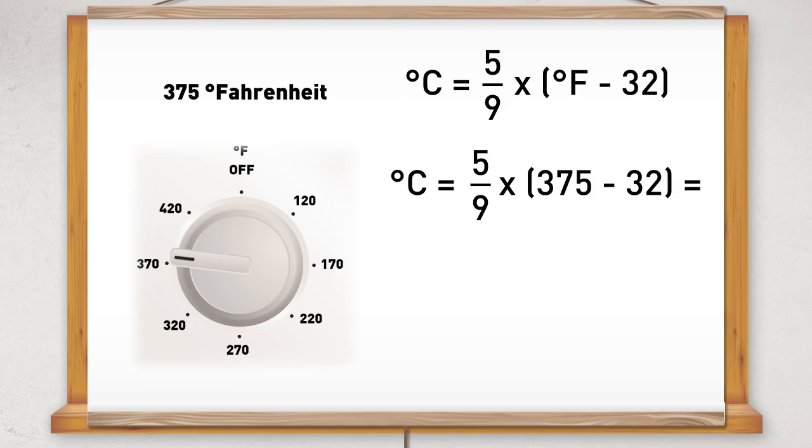Using the correct order of operations, we need to deal with the brackets first. So 375 minus 32 is 343.